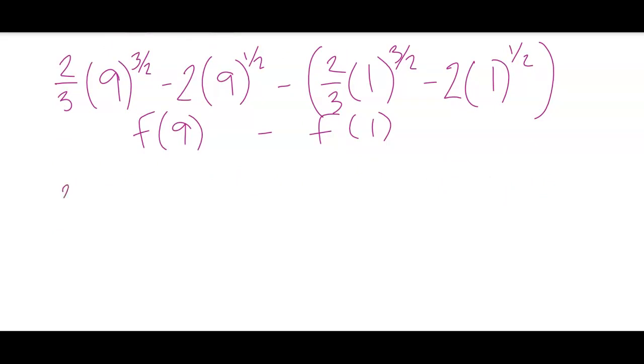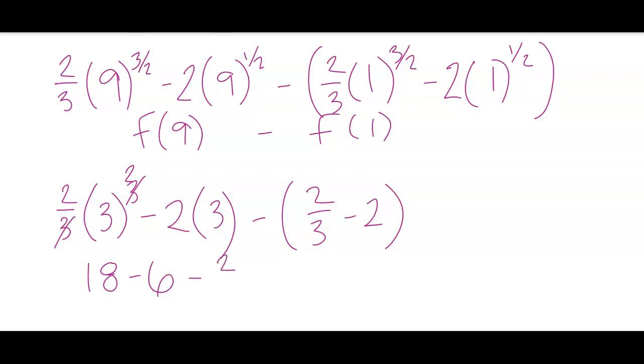So this first one is going to be 2/3 times the square root of 9 is 3, so 3 cubed, minus 2 times square root of 9 is 3, minus 2/3 minus 2. I do end up getting to cancel one of these 3s, and I get 18 minus 6 minus 2/3 plus 2. And that gives me 14 minus 2/3, and I'm going to just leave it as that exact number right here.